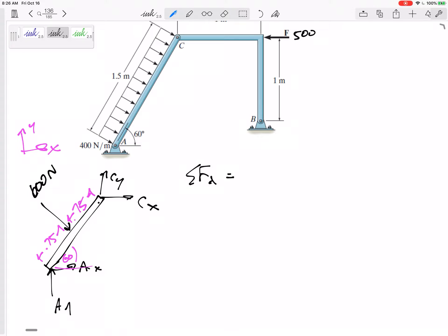So now I can sum the forces in the X direction. CX plus AX. I drew both of those in the positive X direction. And then here we've got 600. Now, I feel like I do this a lot, but I still have a lot of students who make mistakes about this. This bar is 60 degrees from horizontal. This distributed load is perpendicular to it. So it is 60 degrees from vertical right there. So that's why this would be 600 sine 60 in the X direction.